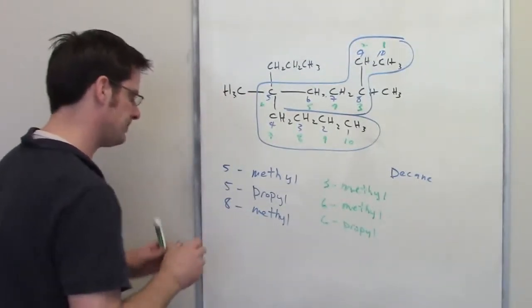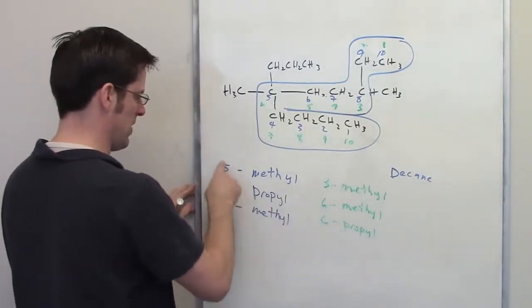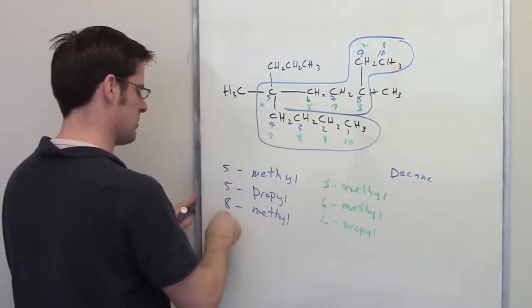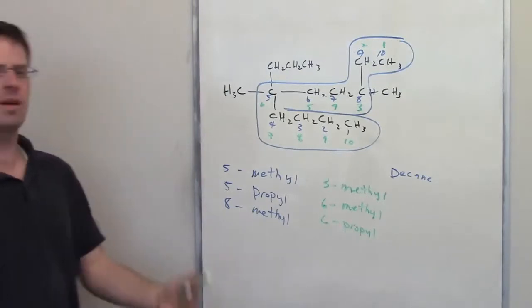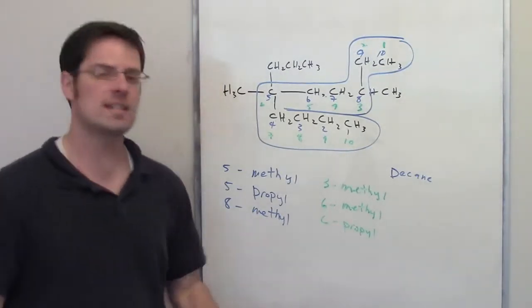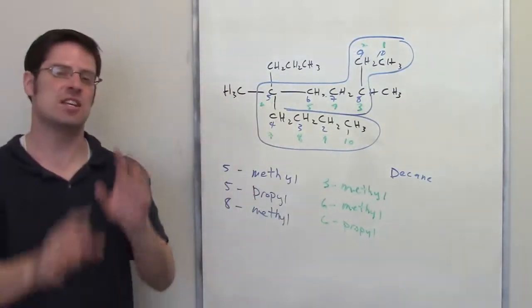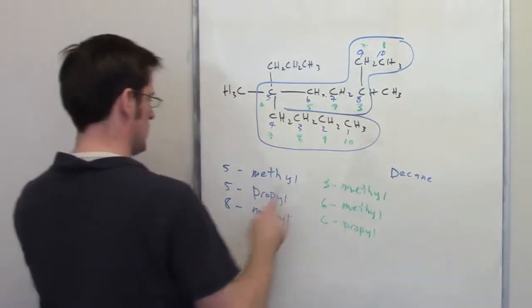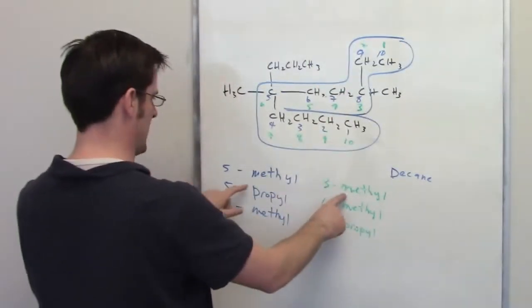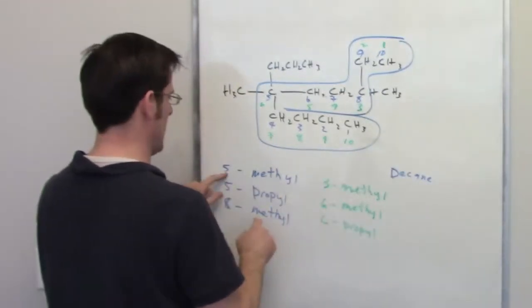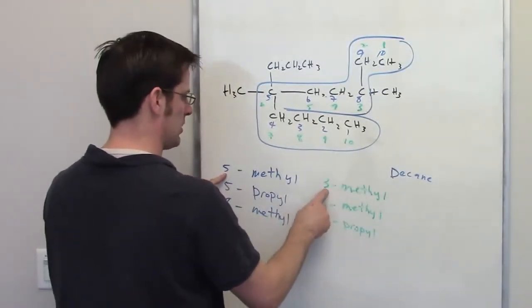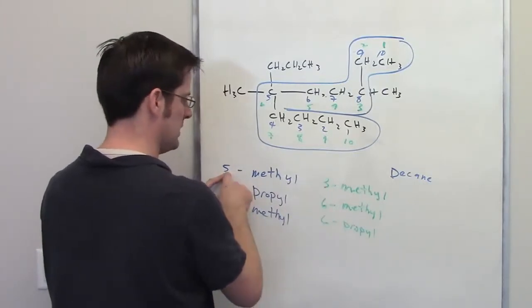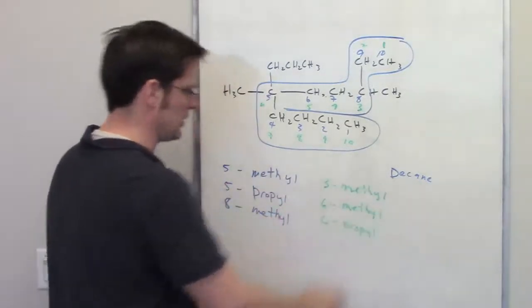So that would be the number scheme for the green direction. Which one is right? Which one is wrong? Well, you'll see that 3 is smaller than the 5s, but 6 is smaller than the 8s. Which one do I pick? The one that ends up being right is, once again, the one that gives you a smaller number at the first point of difference. So let's go ahead and look down. Alphabetically, m comes first, so I'll look at the m's first. I've got a 5 here and a 3 here. 3 is smaller than 5, so I'm done. The green direction is right.